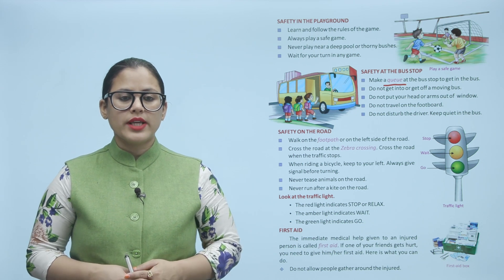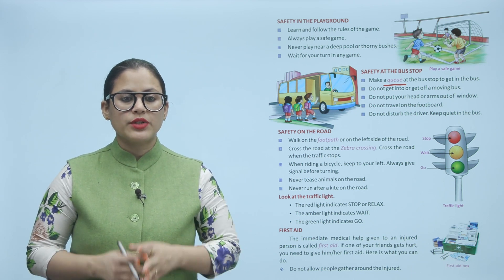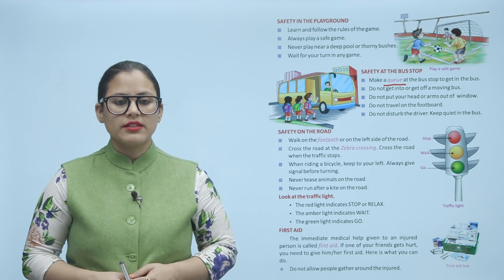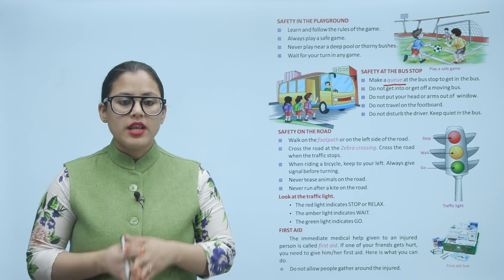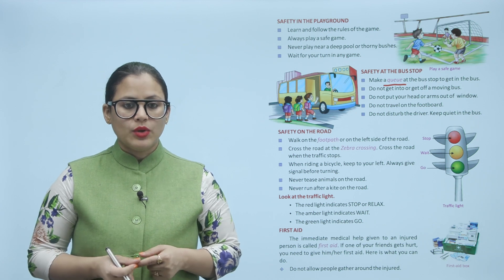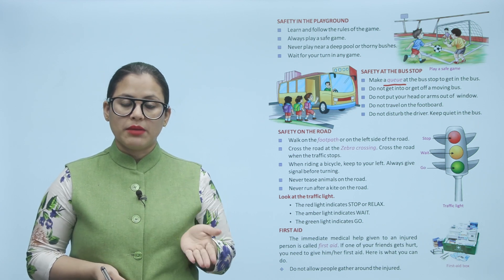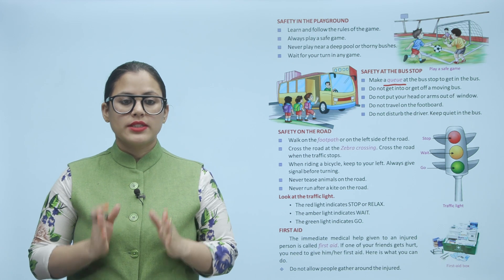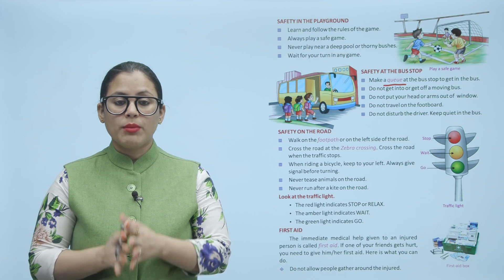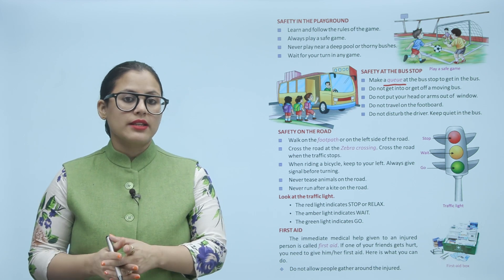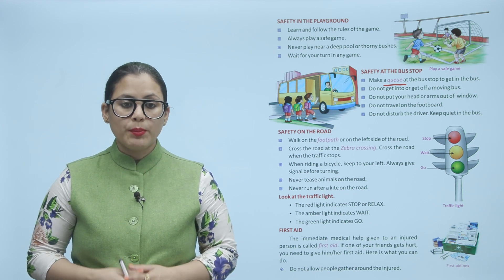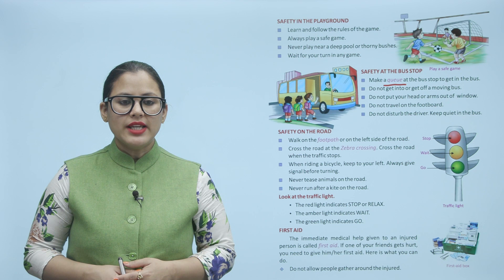Safety on the road: walk on the footpath or on the left side of the road. Cross the road at the zebra crossing and only when the traffic stops. When riding a bicycle, keep to your left and always give a signal before turning. Never tease animals on the road and never run after a kite on the road. Hamesha footpath pe chalein, ya road ke left side mein. Zebra crossing se road cross karein. Bicycle chalate waqt left side chalein aur signal zaroor dein. Road pe kisi bhi animal ko tease na karein aur patang ke peeche na daudhein.